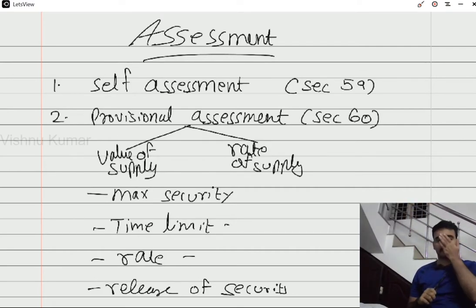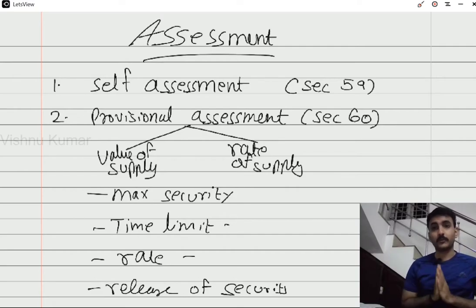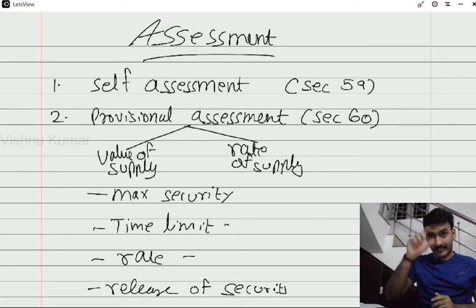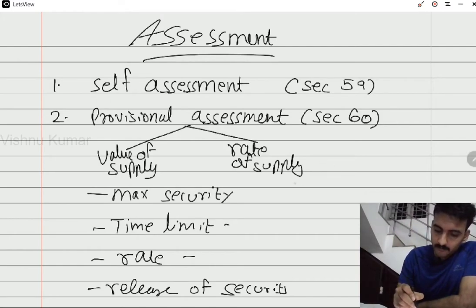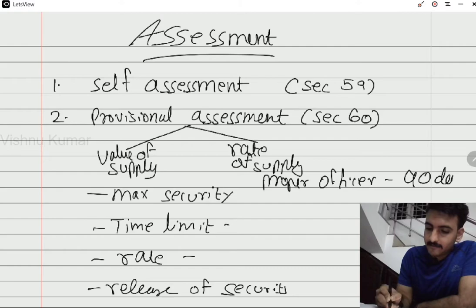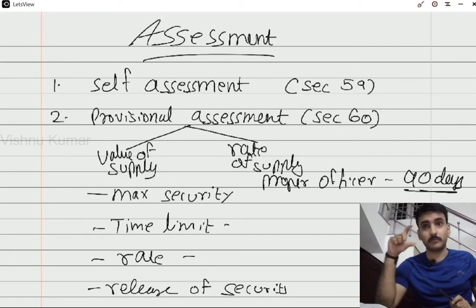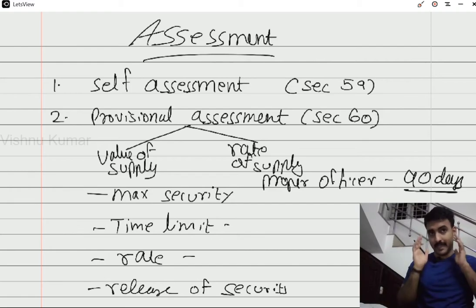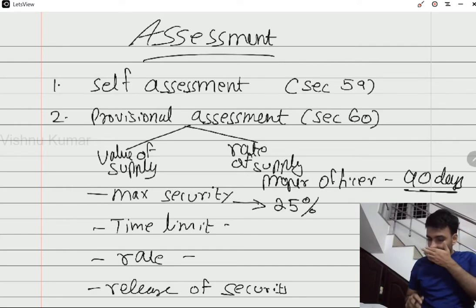So the procedure for provisional assessment is: the assessor has to request the proper officer for a provisional assessment. The proper officer has to pass an order within 90 days from the application. When we take a provisional assessment, we take a bond. When we take a bond, we also take a security deposit. The maximum amount of security that can be deposited is 25% of the bond amount.